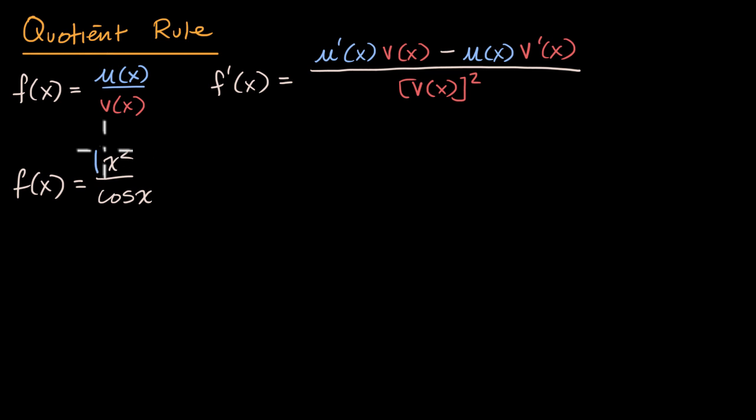Well, our u(x) could be x², so that is u(x), and u'(x) would be equal to 2x. And then this could be our v(x). So this is v(x), and v'(x), the derivative of cos(x) with respect to x, is equal to -sin(x). And then we just apply this.